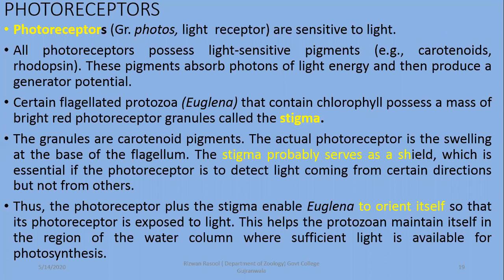Even in the eyes of vertebrates — for example in human eyes — rod and cone cells have rhodopsin or opsin as light-sensitive pigments. These pigments absorb photons of light and then produce a generator potential or action potential, which is ultimately processed by the central nervous system.